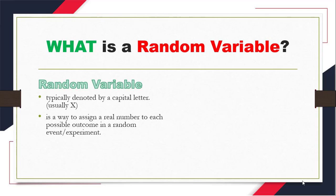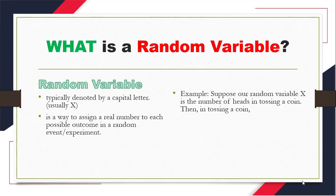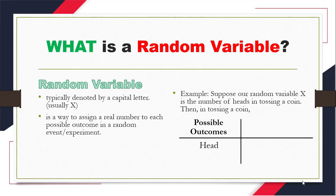Now, to fully understand these statements, let us take an example. Suppose a random variable X is the number of heads in tossing a coin. Then, in tossing a coin, the possible outcomes could only be a head or a tail. And for our random variable X, or the number of heads, our possible outcome which is head can be assigned as 1, and for our possible outcome which is the tail, it could be assigned as 0 since it's not a head. So, we have 0 head.